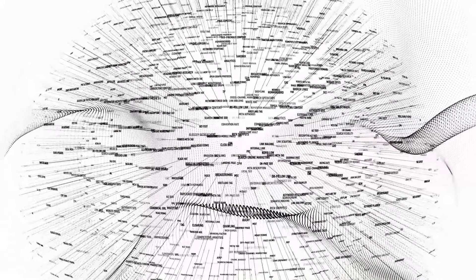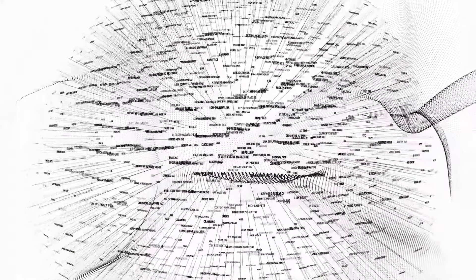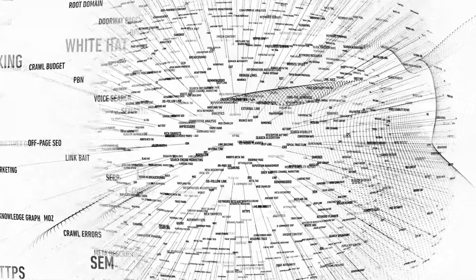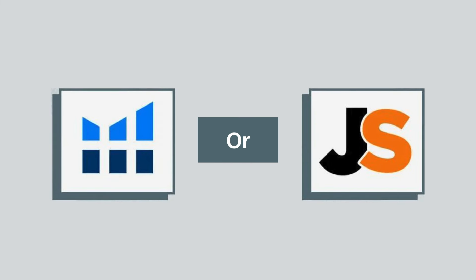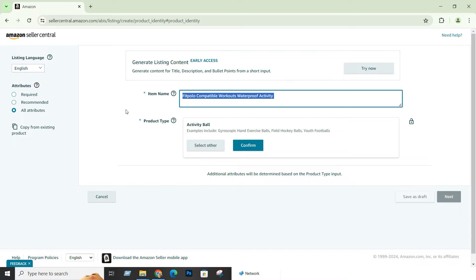I suggest entering the most valuable keywords at the very beginning of your title. You can find those words with the help of Helium 10 or Jungle Scout. If you create a title like this and then add a hyphen, Amazon will take the first 5 words to create your canonical URL. The hyphen is really important — it helps Amazon find the initial 5 words to create the URL.